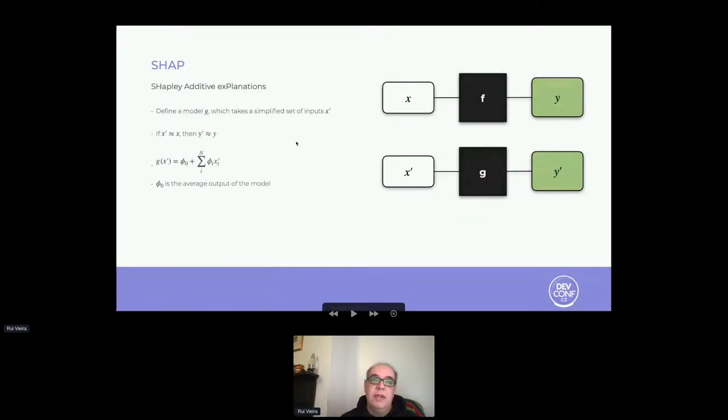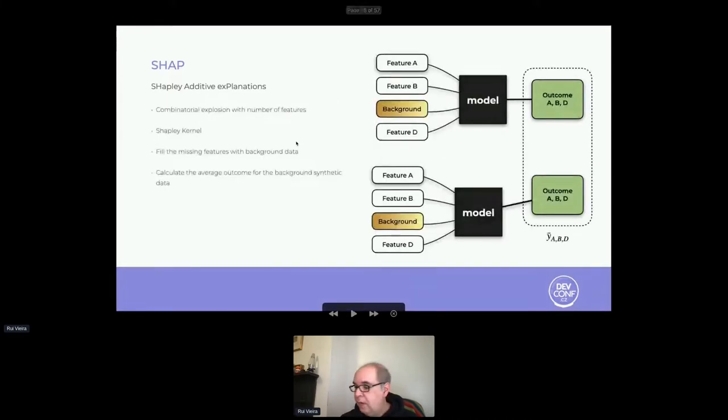How do they apply to SHAP? As with other explainability models, we're using a black box predictive model. In general terms, we take an input X and the model returns an outcome Y. But if we define an alternative model G which takes a simplified set of inputs X prime and returns an outcome Y prime, and we impose a few conditions to this new setup - like if X is quite similar to X prime, then we expect Y to be quite similar to Y prime - and we also impose that the model G should have this linear form where phi zero is background data and phi I is the effect of each feature, which will be the Shapley value for each feature.